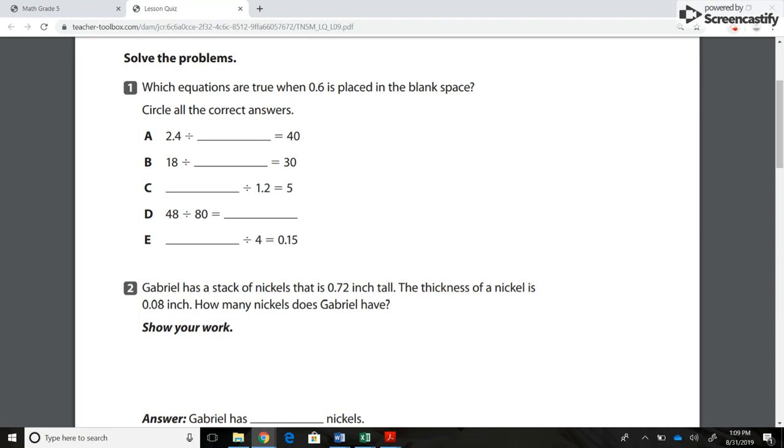A. 2.4 divided by blank equals 40. B. 18 divided by blank equals 30. C. Blank divided by 1.2 equals 5. D. 48 divided by 80 equals blank. E. Blank divided by 4 equals 0.15.